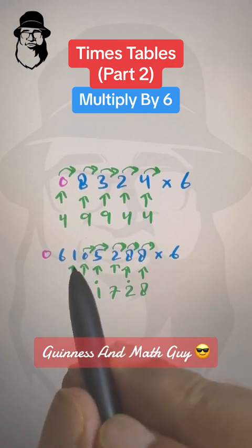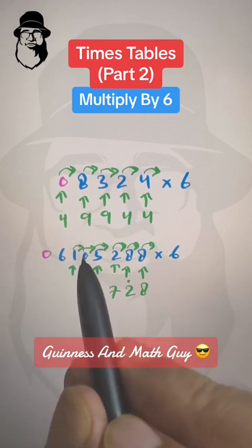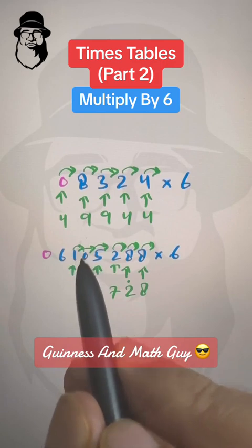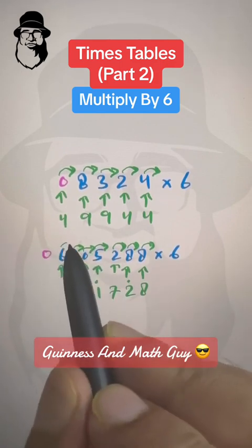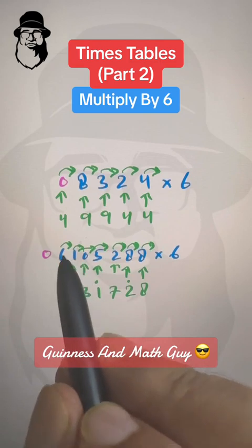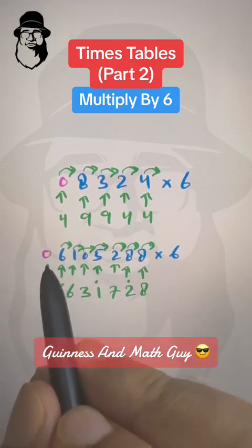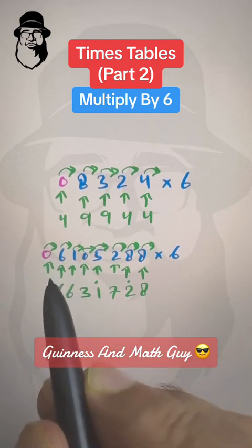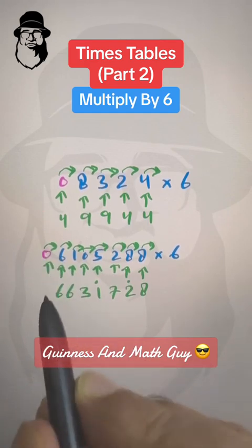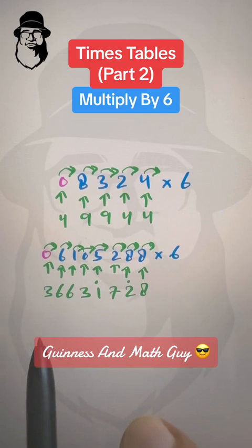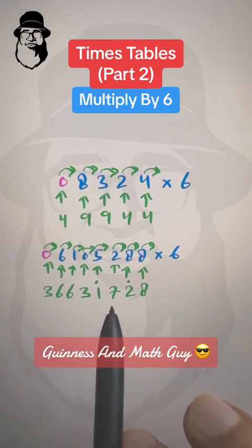Then 1 is odd, so right away add 5 to make it 6. 6 plus half of 0 is 0, so 6 plus 0 is still 6. Then: 6 plus half of 1 is 0, so 6 plus 0 is still 6. Then: 0 plus half of 6 is 3, so 0 plus 3 is 3. Our final answer is 3,663,1728.